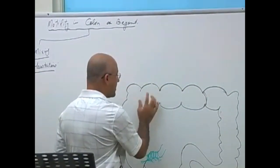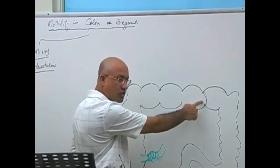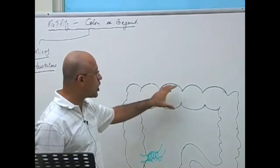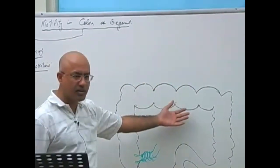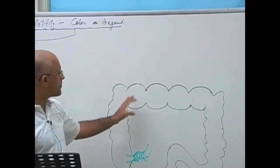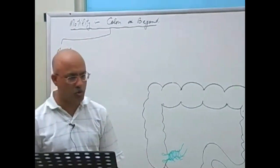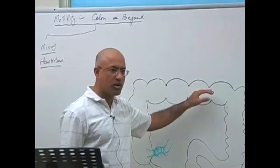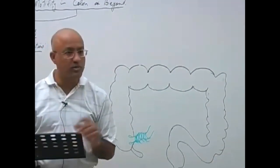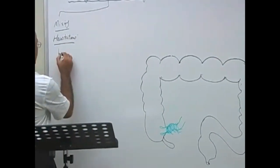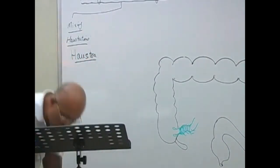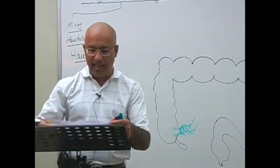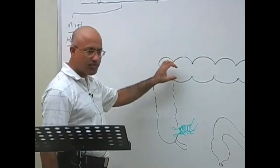The large intestinal contents are compressed between these constrictions, acting as a mixing movement. The constrictions dig into the semi-solid material and chop it again and again, appearing at different sites so that different areas of content are exposed. In this way, the semi-solid content of the large gut is gradually converted into fecal matter. These swollen bags are called haustra — H-A-U-S-T-R-A — and the movements that produce them are called haustrations.